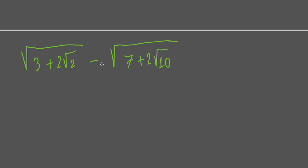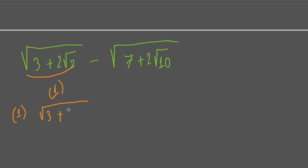We will do one by one — there are two expressions in this problem. We will simplify the first expression. From the first expression, we can easily see that 3 plus 2 square root of 2 equals the square root of something.